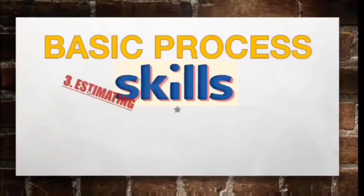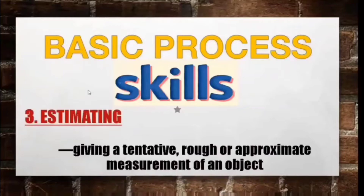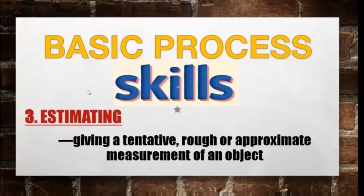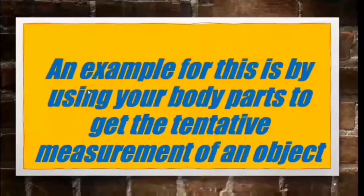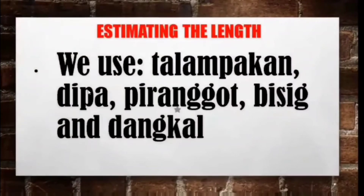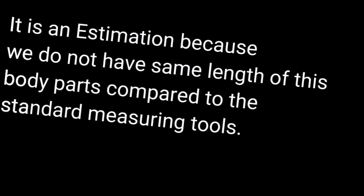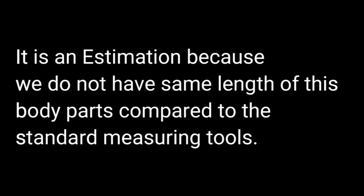Skill number three: estimating. Estimating is the skill of giving a tentative, rough, or approximate measurement of an object. The word tentative means not final, and approximate means not exact. An example is using your body parts to get a tentative measurement of an object. We use the talampakad, dipa, piranggot, bisig, and dangkal for estimating the length of an object. It is an estimation because we do not all have the same length of these body parts.